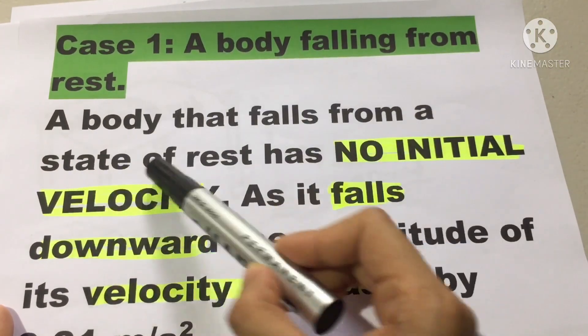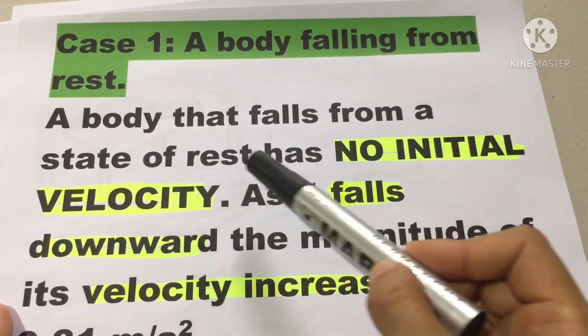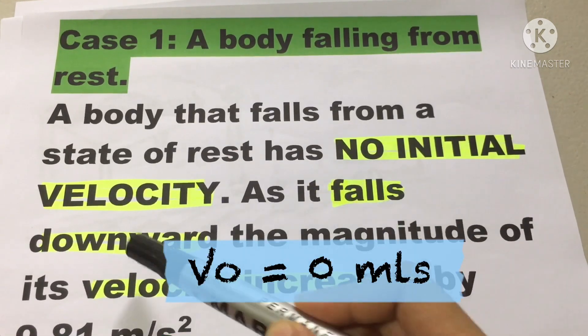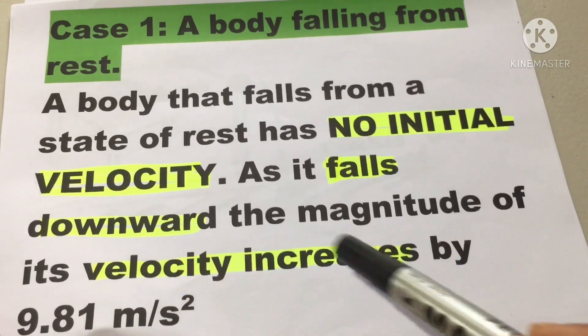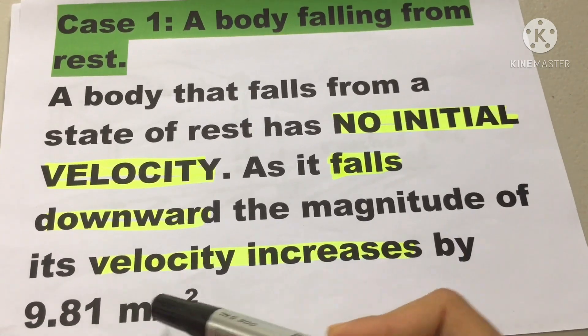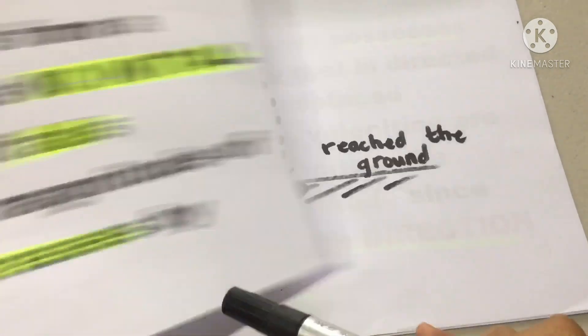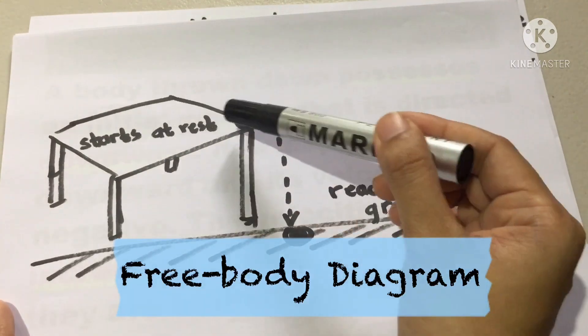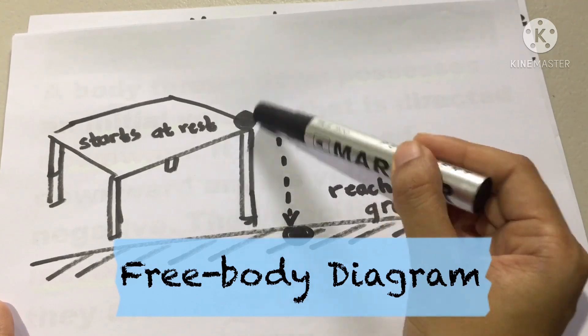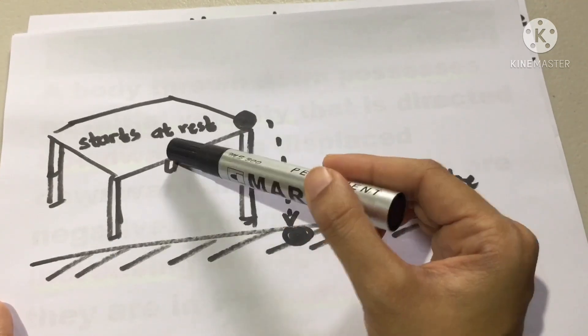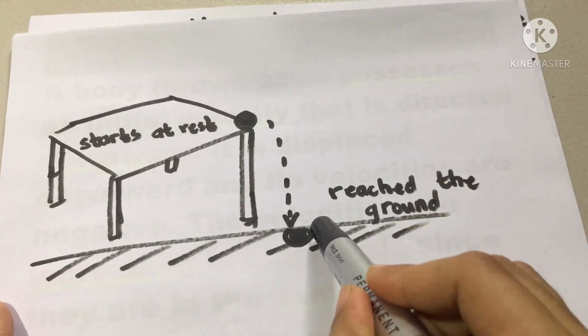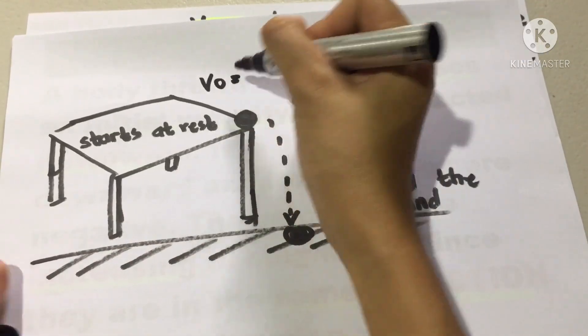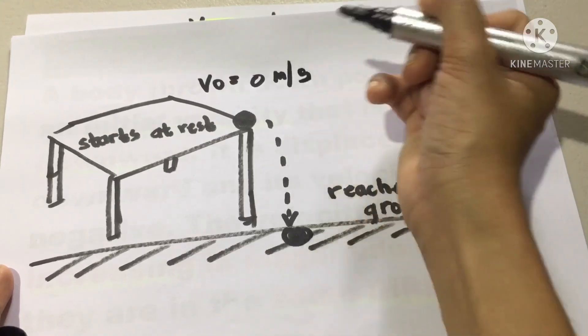Case 1: A body falling from rest. A body that falls from a state of rest and has no initial velocity. As it falls downward, the magnitude of its velocity increases by 9.81 meters per second squared. Let's analyze our table or free body diagram. So here is our ball or object. It starts at rest. Therefore, it has no initial velocity or our initial velocity is equal to 0 meters per second.